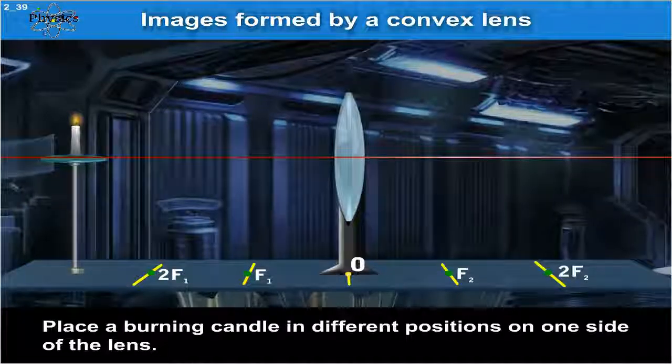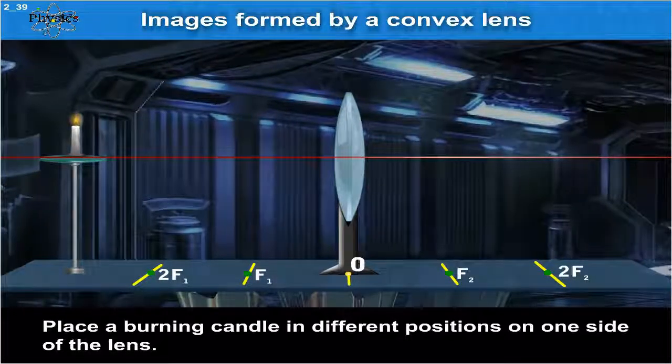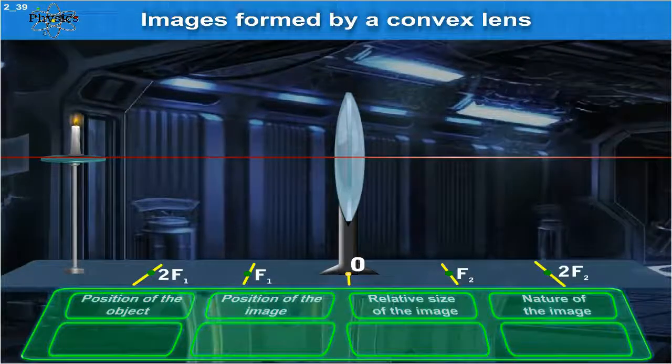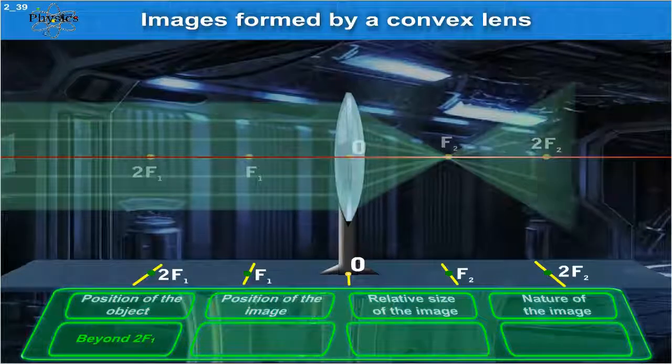Place a burning candle in different positions on one side of the lens. 1. Far beyond 2F1 to the left.